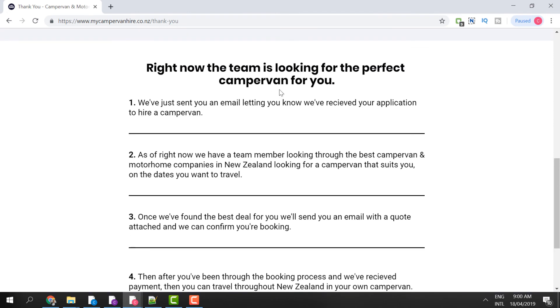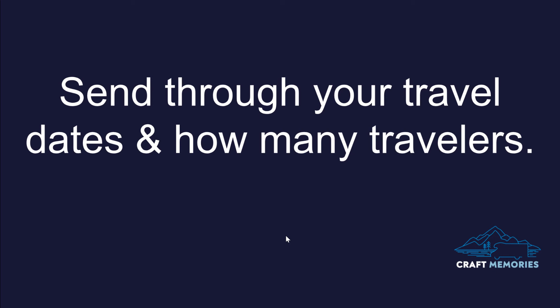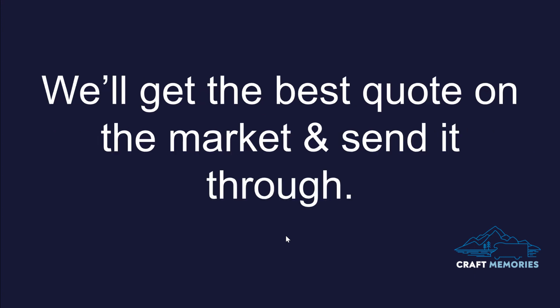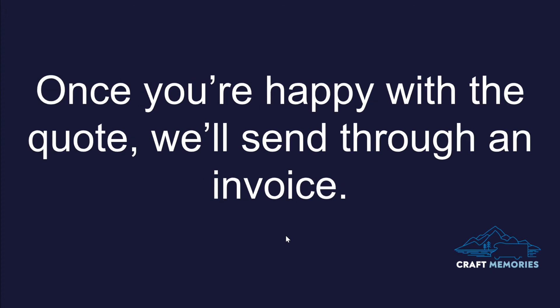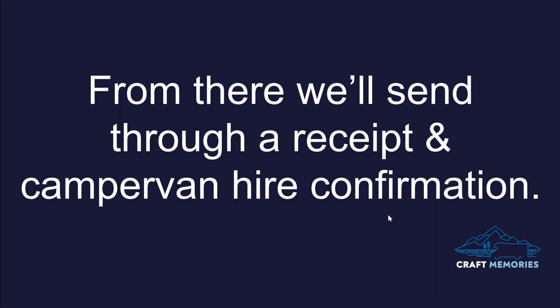If we scroll down, we can see some quick steps for what's happening next. At a high level, here's how the entire process works: first, you send through your travel dates and how many travellers will be joining you. Next, we get the best quote on the market and send it through to you — we contact all our suppliers to find who has a campervan on your desired dates at the best rates. Once you've approved the quote, we move forward and send through an invoice so you can make payment for your campervan rental. Then we send a receipt and campervan hire confirmation, confirming your payment and finalising the hire so it's set aside for you.